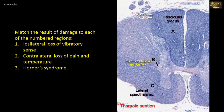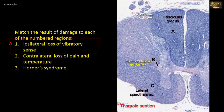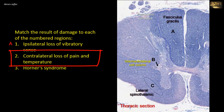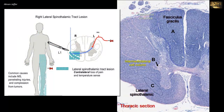Returning to the damage: ipsilateral loss of vibratory sense would result from a lesion in the fasciculus gracilis, which transmits modalities of vibration, proprioception, and discriminative touch. Contralateral loss of pain and temperature results from a lesion of C, the lateral spinothalamic tract. Fibers of the lateral spinothalamic tract originate in the contralateral nucleus and cross through the anterior white commissure to ascend in this tract. So damage to the tract results in contralateral loss of pain and temperature sensation.